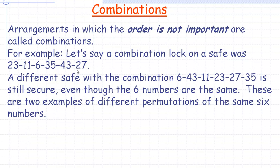This is one case where a so-called 'combination' on a lock is actually a permutation — same numbers, but in a different order, you'd still consider the safe to be secure, because changing the order makes it a different combination for the safe. So these two examples are actually different permutations of the same six numbers. The word 'combination lock' does not have the same meaning as the mathematical term 'combination.'